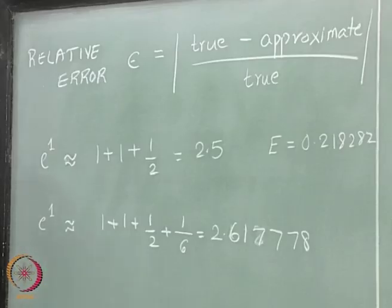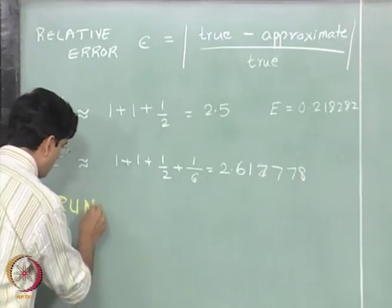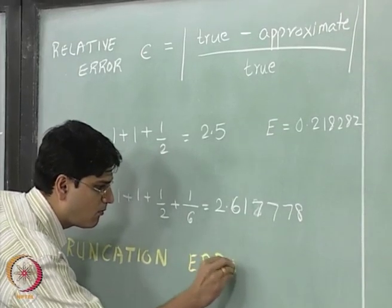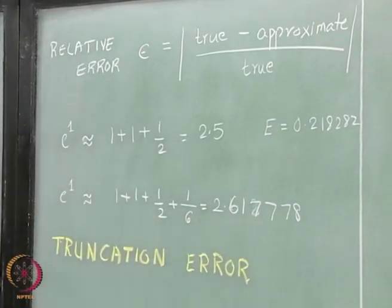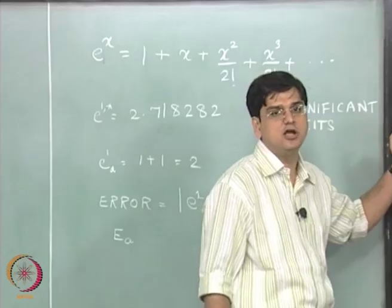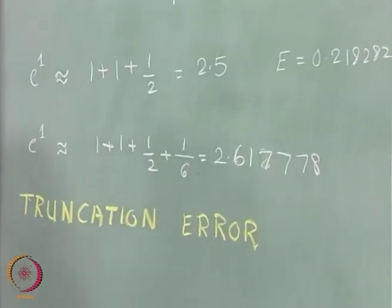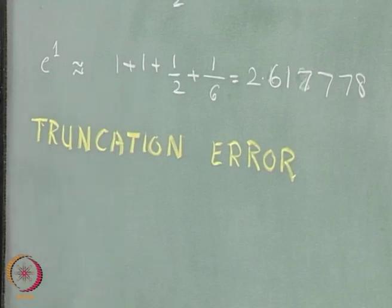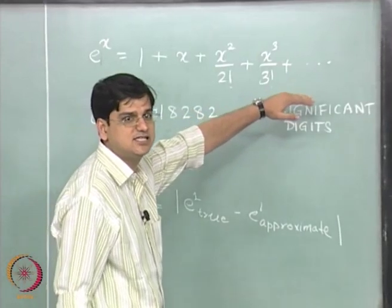That leads me to the first definition that is of importance to us and that definition is truncation error. Truncation error comes up because we are not going to use infinite number of terms in this series expansion, but at some point of time, we will say that we are not going to use any additional term. This current approximate value is sufficient for our purpose.